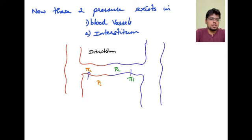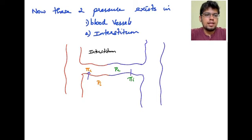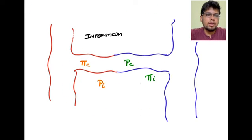Pi_c, the colloid osmotic pressure of the capillary, collects water towards itself, so water from the interstitium goes into the capillary. Similarly, pi_i causes water from the capillary to go into the interstitium. P_c, the hydrostatic pressure of the capillary, pushes water to the interstitium, and P_i pushes water from the interstitium to the capillary.